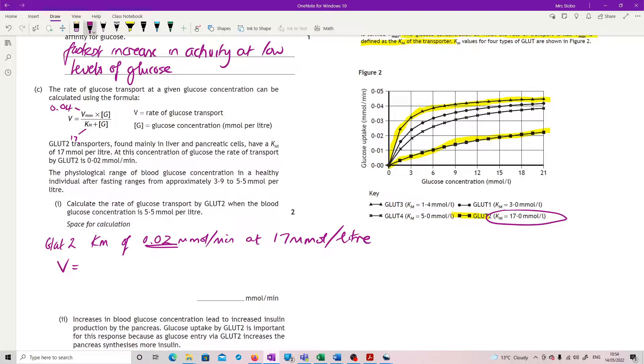So that means if I substitute this into the equation, what I'm saying is it's 0.04 because that's what my Vmax is, multiplied by my glucose concentration which is 5.5, divided by Km, now that's the 17, plus my 5.5. Plug all that in and you get 0.0098